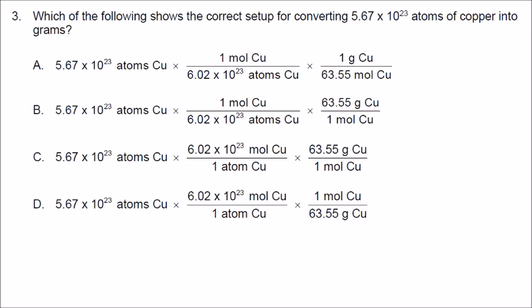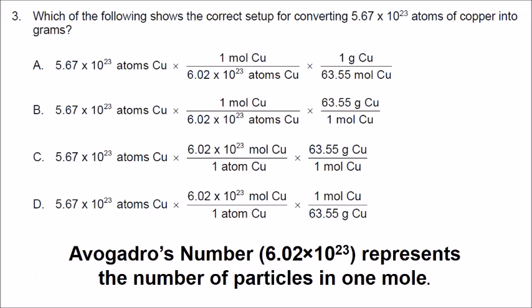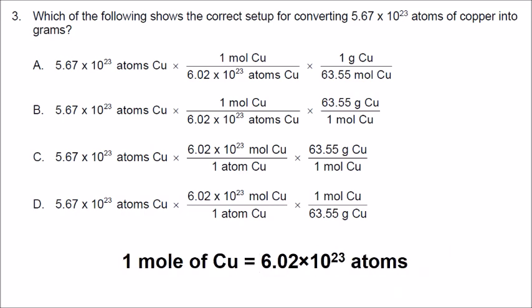Number 3 is also a multiple-choice question. We are starting with 5.67 times 10 to the 23rd atoms of copper, and in two steps we have to convert this into grams of copper. Based on the first step using Avogadro's number, there are 6.02 times 10 to the 23rd atoms in one mole. Choices C and D say one atom of copper equals 6.02 times 10 to the 23rd moles — that's wrong, so we eliminate choices C and D.